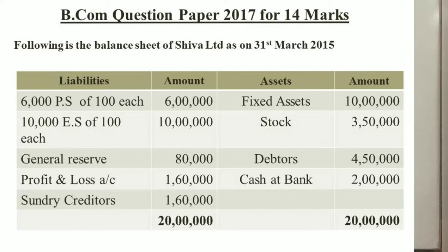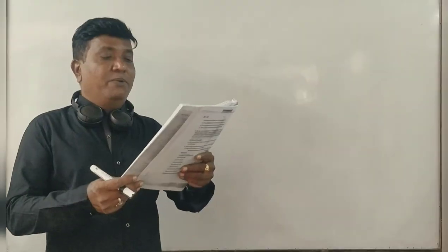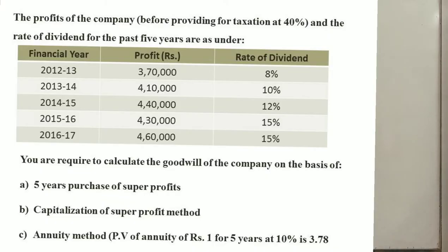The balance sheet of Sadananda Company Limited as on 31st March 2017 is as under. Liabilities include 6,000 preference shares of 100 each, 10,000 equity shares of 100 each, general reserve, profit and loss account, and sundry creditors. Assets include fixed assets, stock, debtors, and cash and bank. Total balance sheet is 20 lakhs. The profits of the company before providing for taxation at 40%, and the rate of dividend for the past 5 years are given.